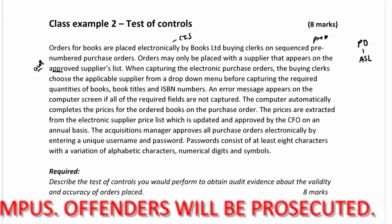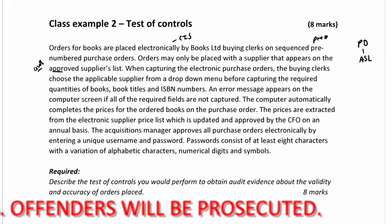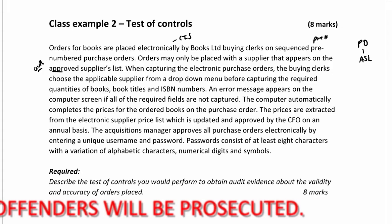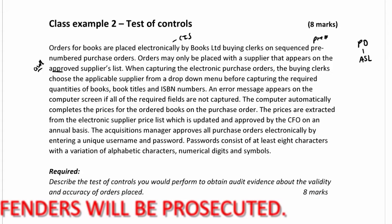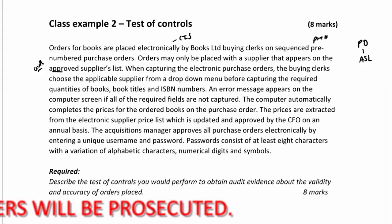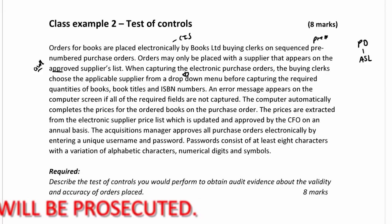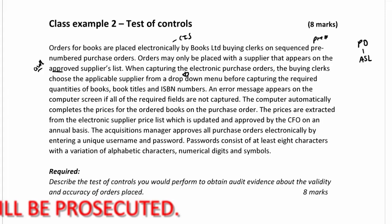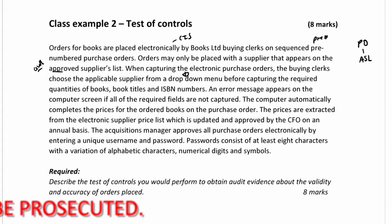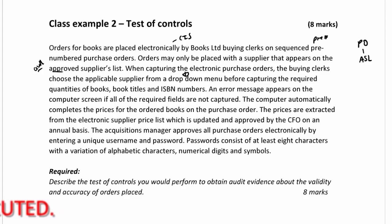When capturing electronic purchase orders, the buying clerks choose the applicable supplier from a drop-down menu. This is a drop-down control. Before capturing, the required quantities of books, book titles, and ISBN numbers must be entered.